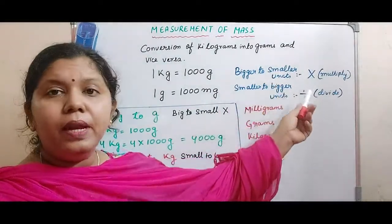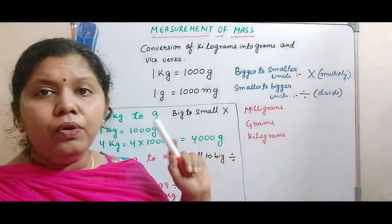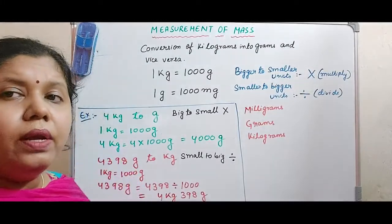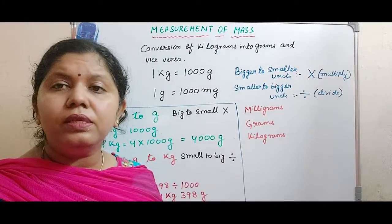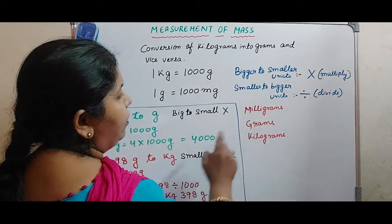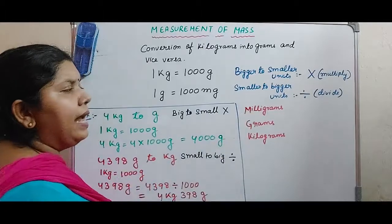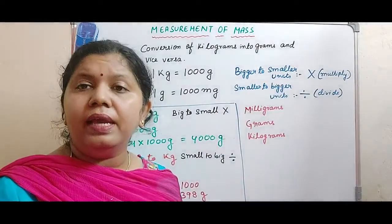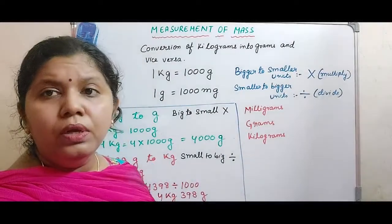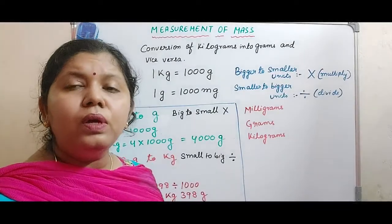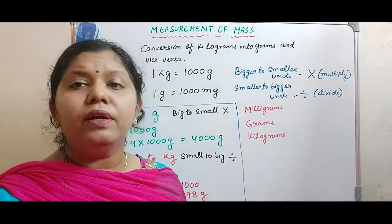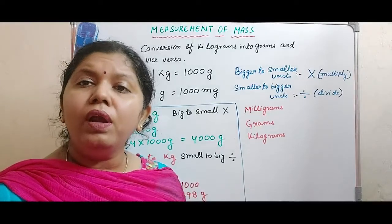Big to small, you will multiply; small to big, you will divide. For this standard 3, you are reading about 3 important units in measurement of mass: milligrams, grams, and kilograms. These 3 units are arranged in ascending order — from small to big. So if you are asked to convert from a smaller unit to a bigger unit, you go for division, and from bigger to smaller unit, you go for multiplication.